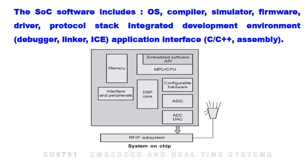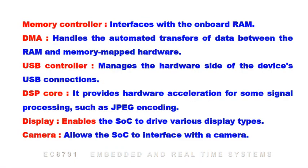This is a system on chip block diagram. It includes memory, interface and peripherals, DSP core, embedded software, application software, microcontroller and microprocessor, configurable hardware, ASIC blocks, analog to digital and digital to analog converters. All signals go to RF signals, RF systems, and into the transmitter.